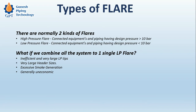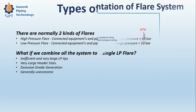If we combine all systems into one single LP flare, the consequences include inefficient and very large LP tips — the tip being the portion where the fire is visible — very large header sizes which are undesirable from an economy and operations standpoint, excessive smoke generation, and general uneconomy. To avoid all these issues, we use two flares: a high pressure flare and a low pressure flare.